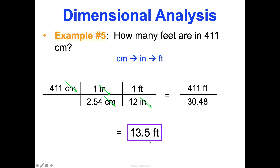You may be wondering how to know how to round. Honor students, we talked about this — you never want your final answer to have more significant figures than your starting number. Our starting number 411 had three sig figs, so we want our final answer to have three sig figs. That's how we knew to round to 13.5 feet. So there are 13.5 feet in 411 centimeters.